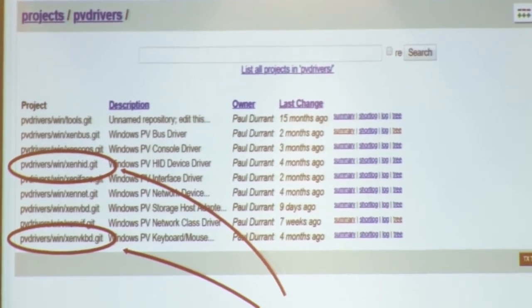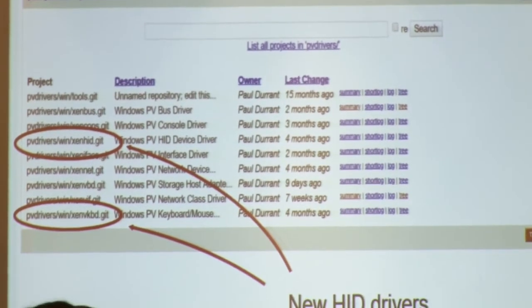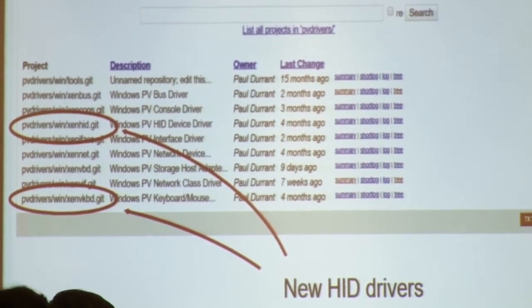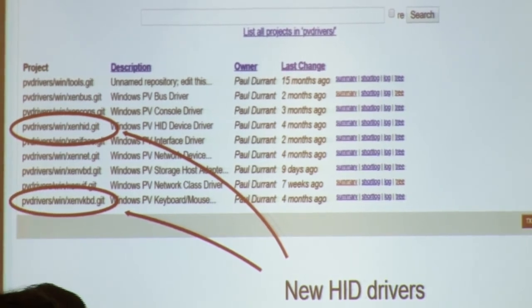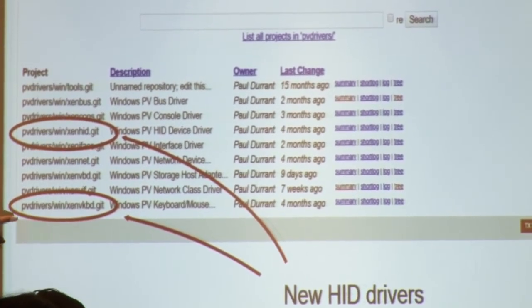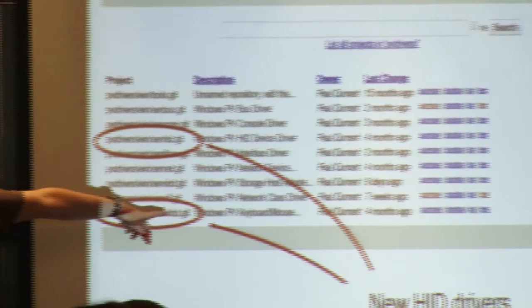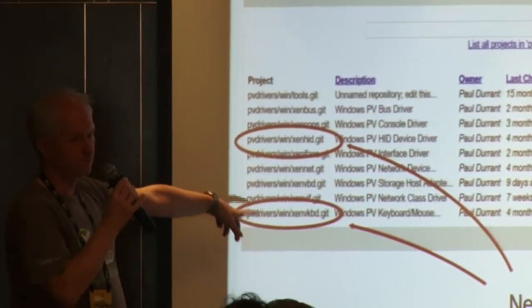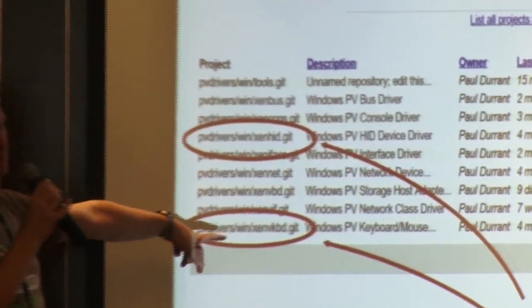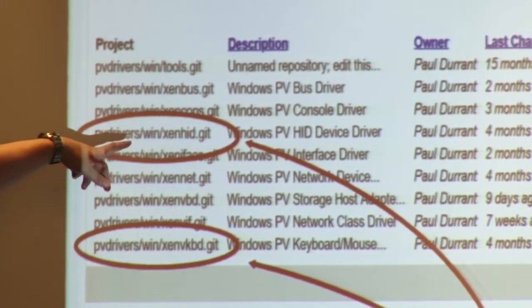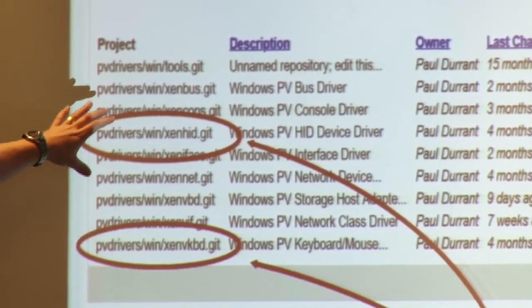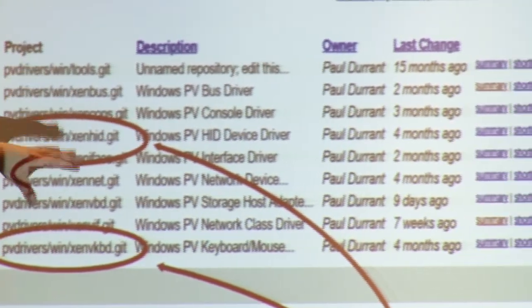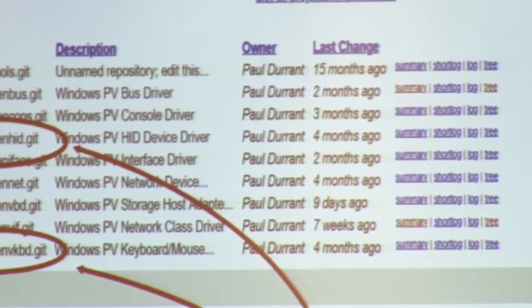We also have some new drivers. The first pair are new HID drivers. HID is Human Interface Device. There's a new class driver for the VKBD protocol — the protocol for keyboard and pointing device. And then we have the actual HID driver, which because of the way human interface devices work in Windows, you don't need separate keyboard and pointing drivers — you can have one driver that does both jobs.